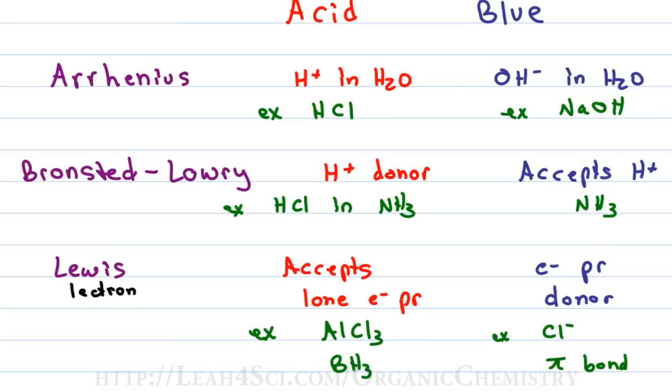If I have the Arrhenius acid giving up an H+ and the Bronsted-Lowry giving up an H+, the molecule in order to be able to give up that H+ must be positive or partially positive. HCl has a partially positive hydrogen. H2SO4, partially positive hydrogen. Alcohol, partially positive hydrogen. And then we look at the Lewis acid.